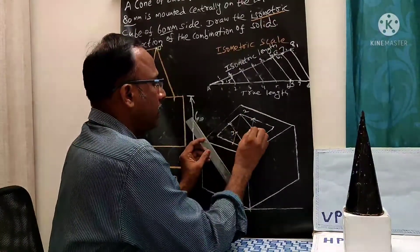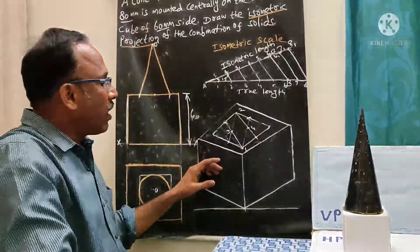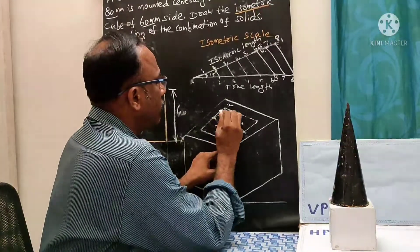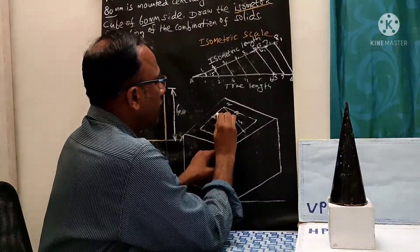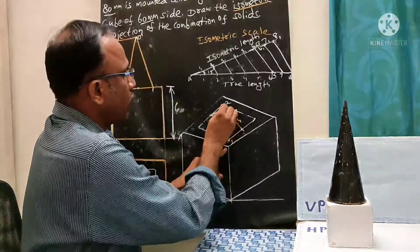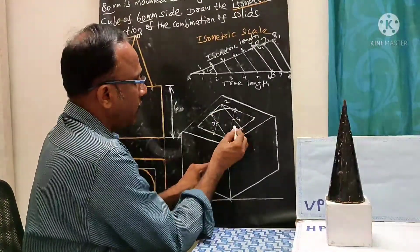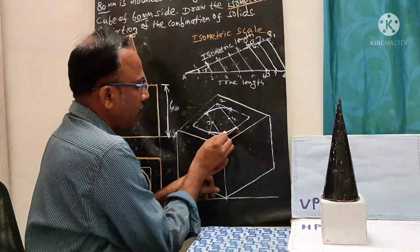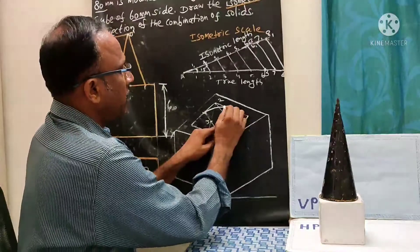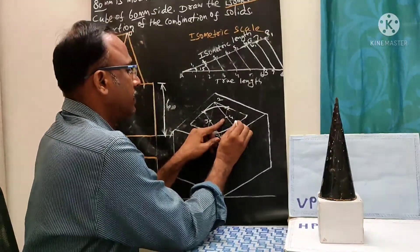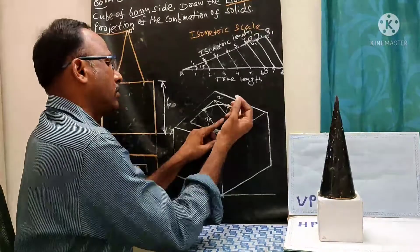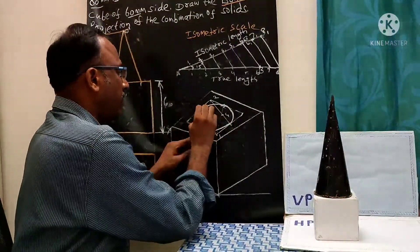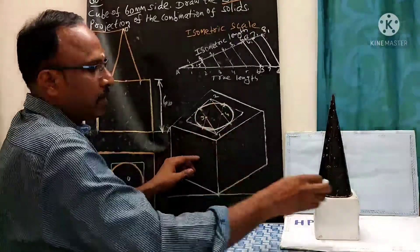This is the third center point and this is the fourth center point. Now take the compass from center one and join by a smooth curve. Similarly take center two and join by curve. Take center four and join, then take center three and join. This is the way we join the bottom base ellipse of the cone using the four-center method.